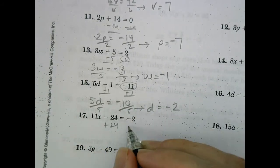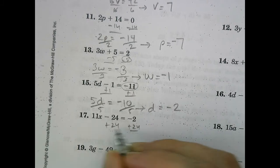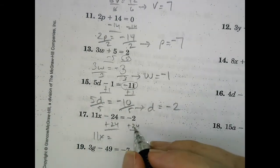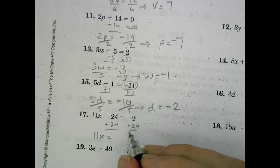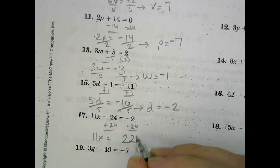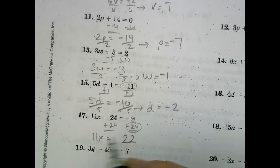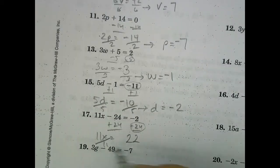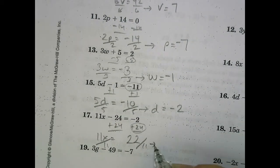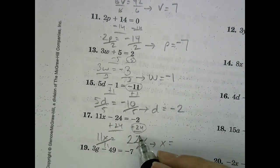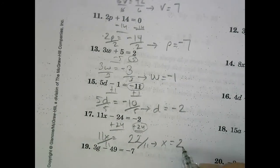For our next one, adding 24 on both sides. So we have 11x equals 24 and 2. Signs are different. Find the difference, which is 22, and keep the greater absolute value, which is positive. Now we'll divide both sides by 11. So I'm left with x equals 22 divided by 11, which is 2.